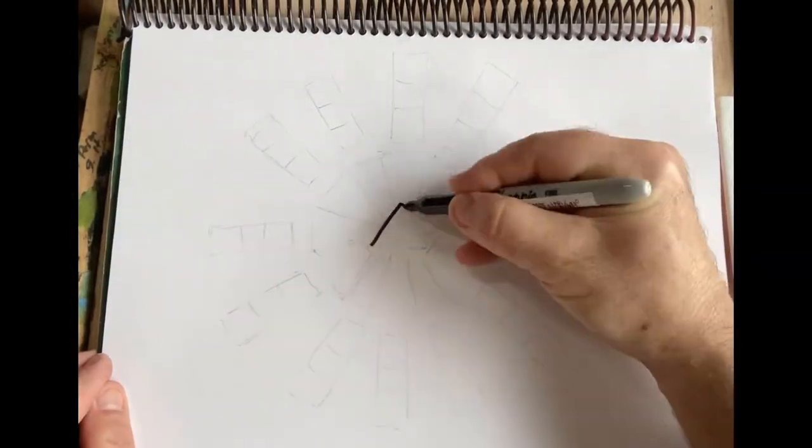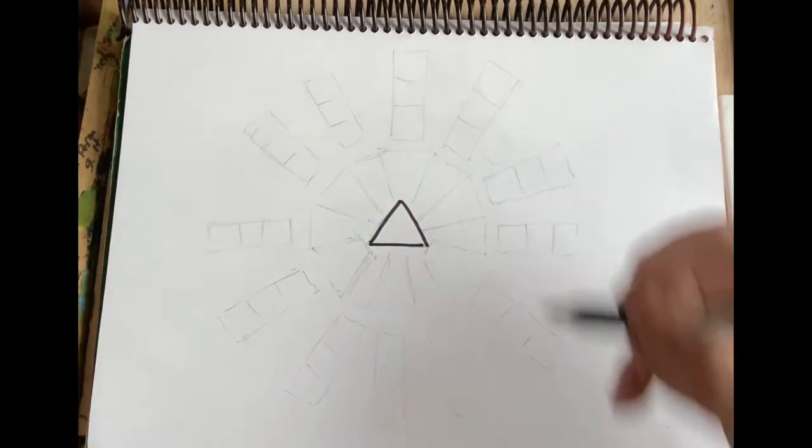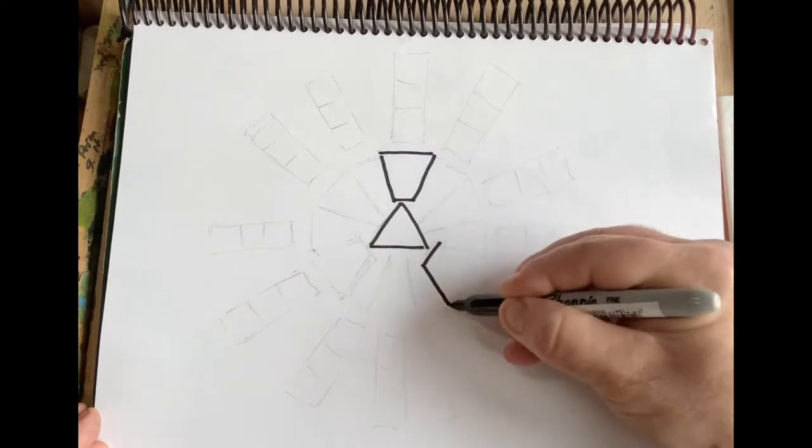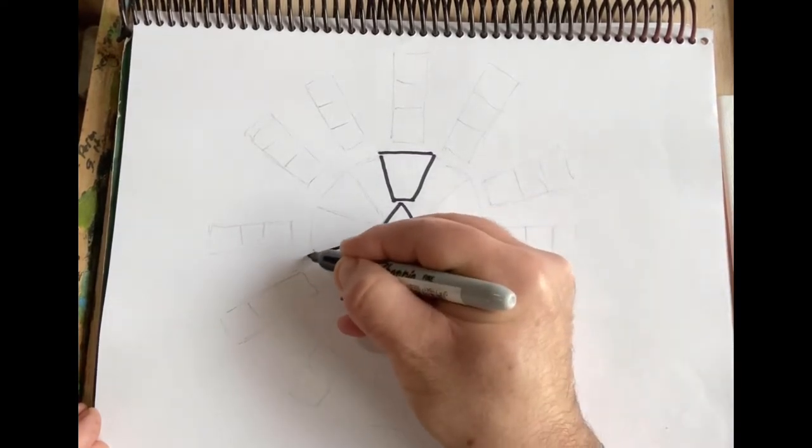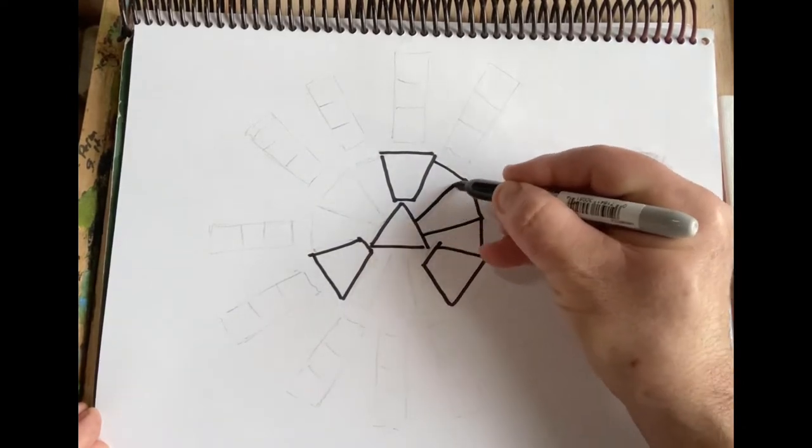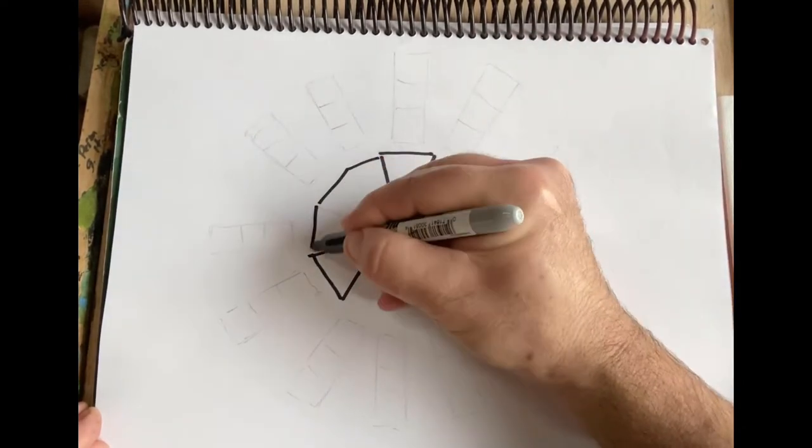So we're going to start today by making a Zorn color chart. In the very middle will be a triangle where we will mix yellow, red, and black. At each point of those triangles we're going to have other color areas: one for black, one for red, and one for the yellow.